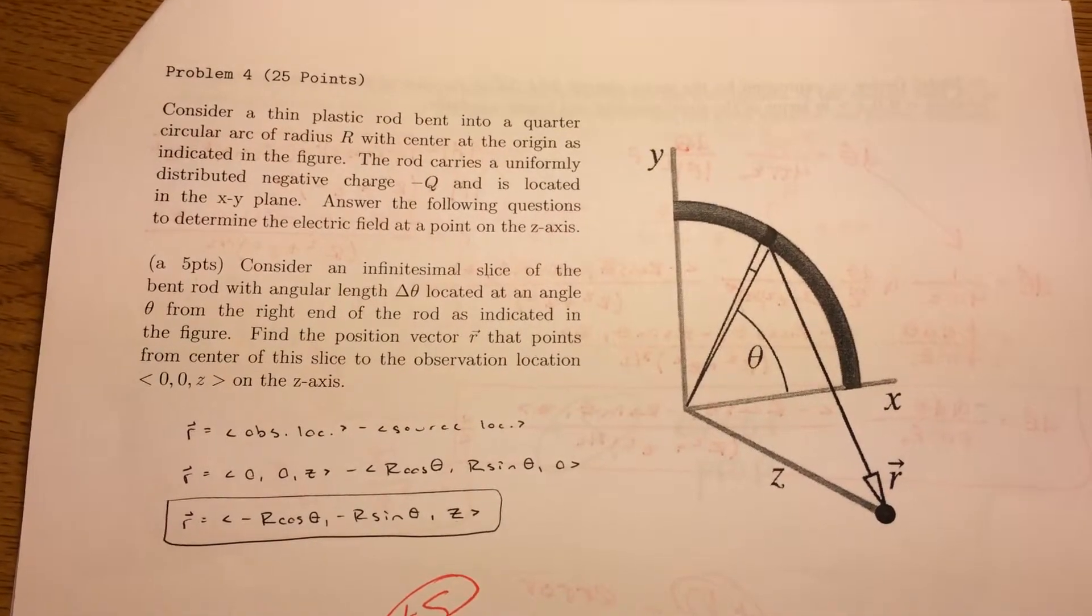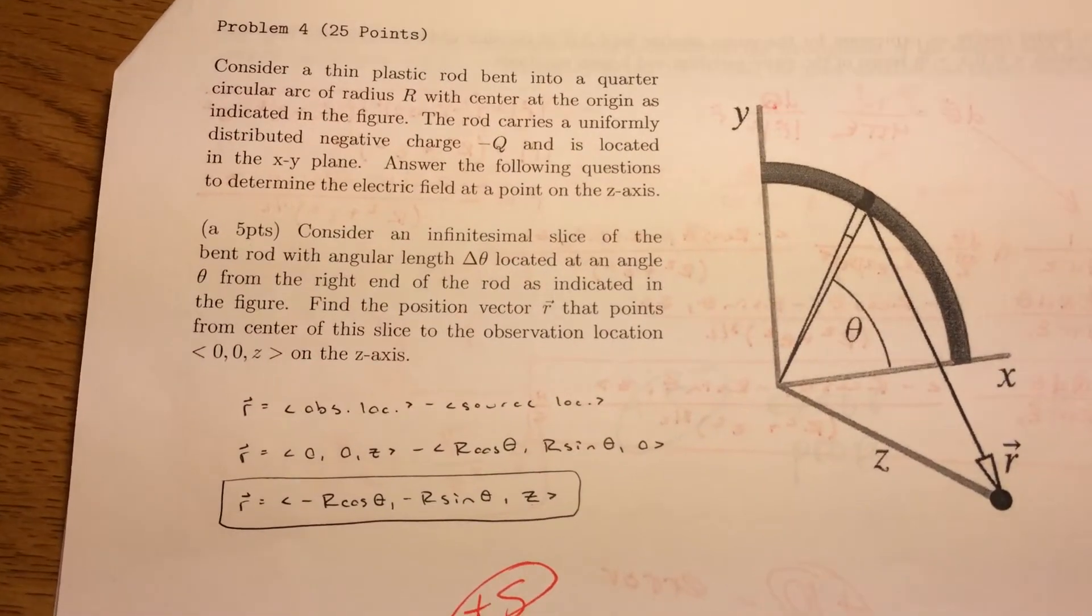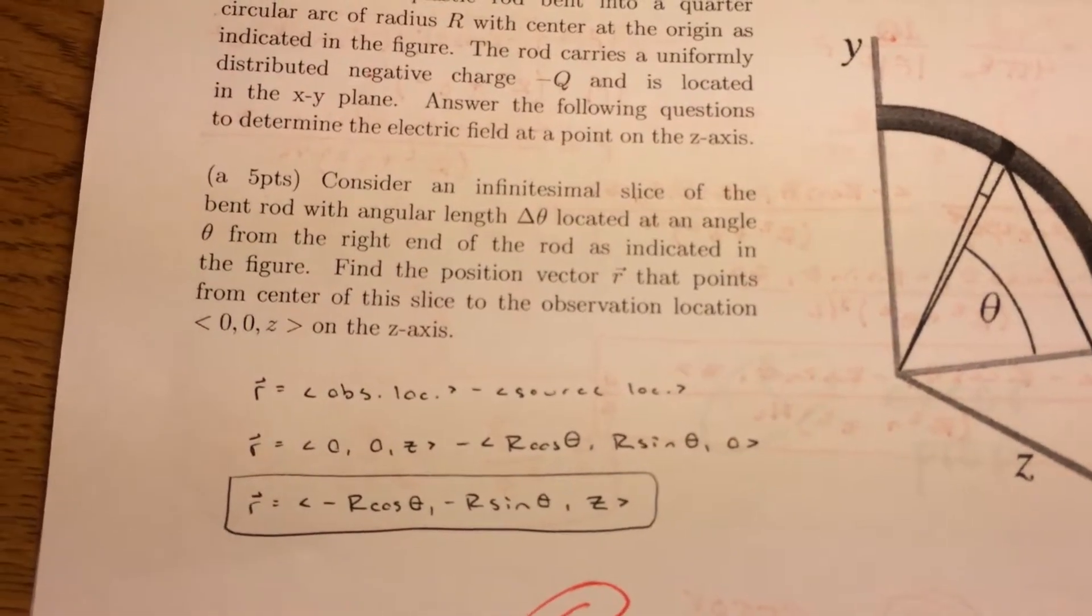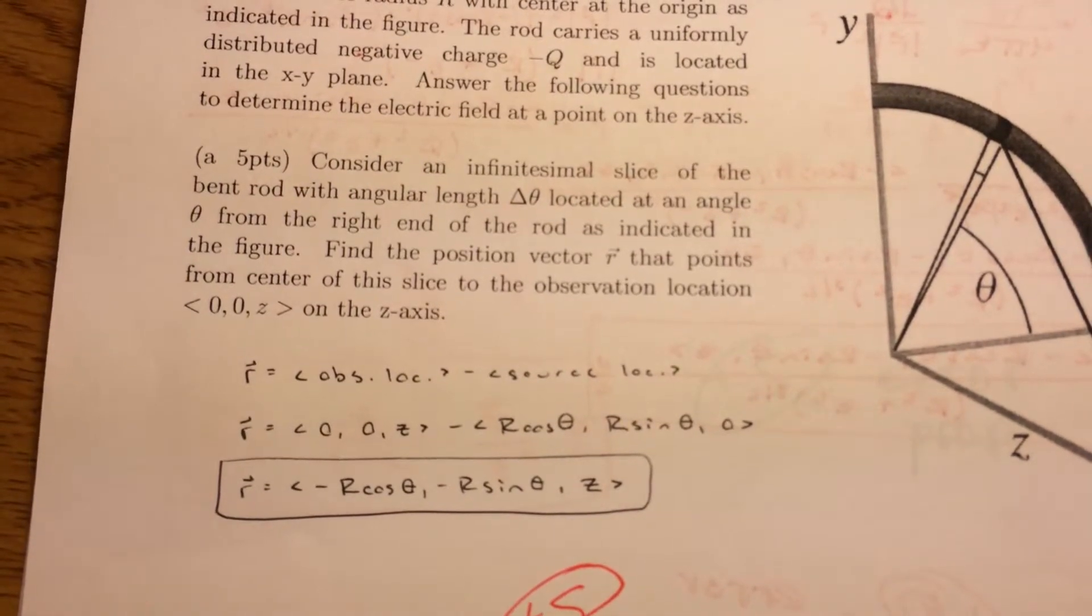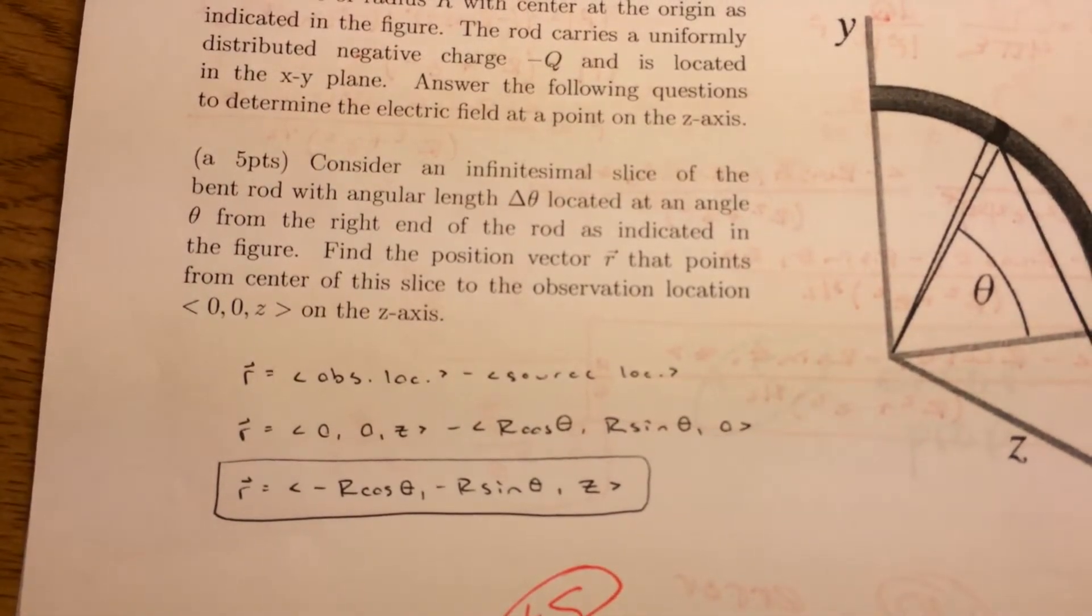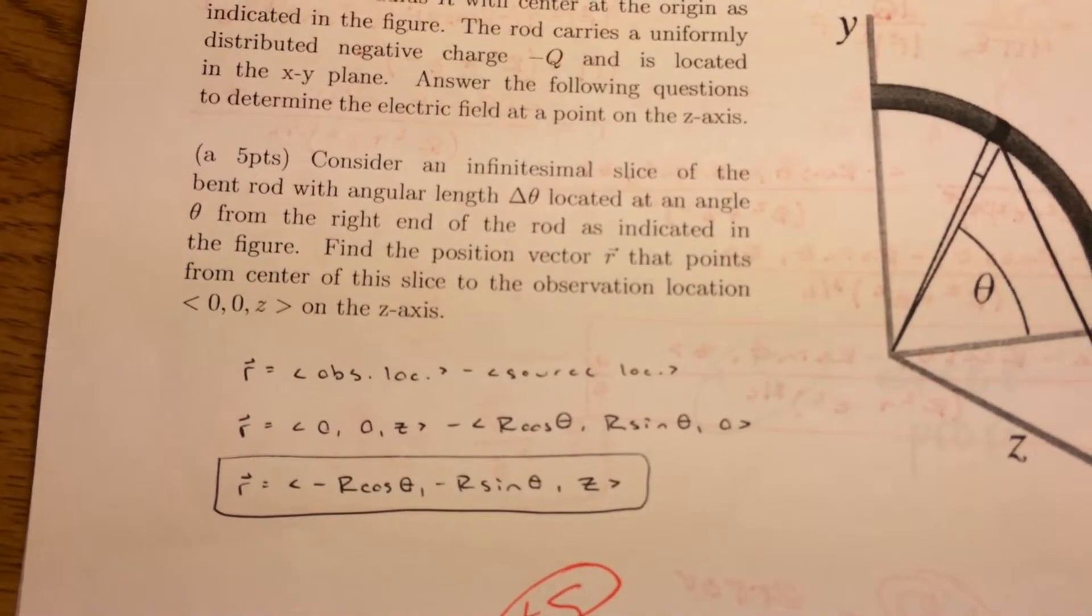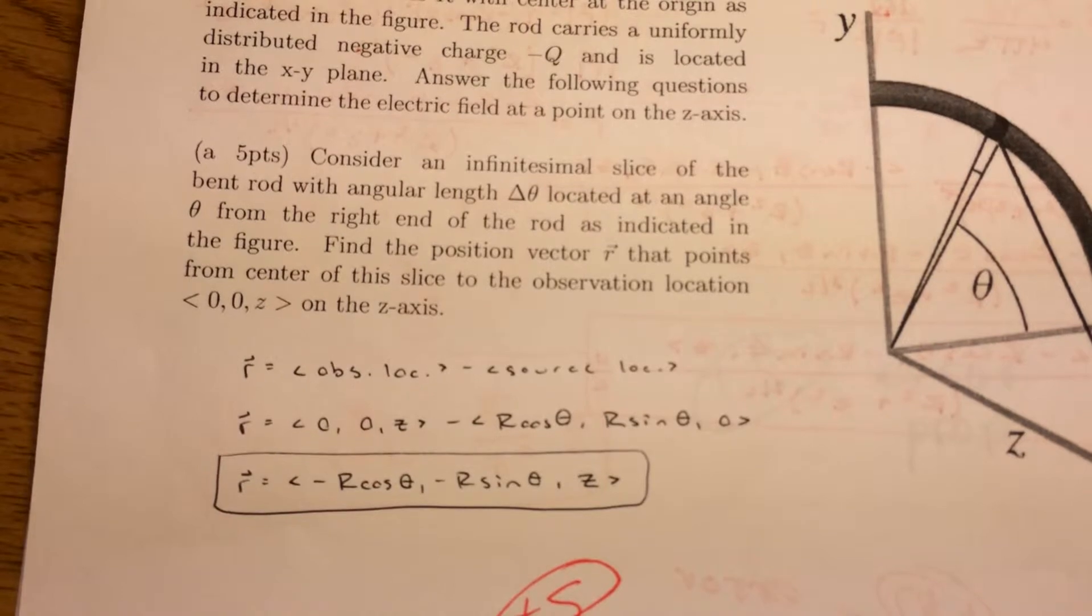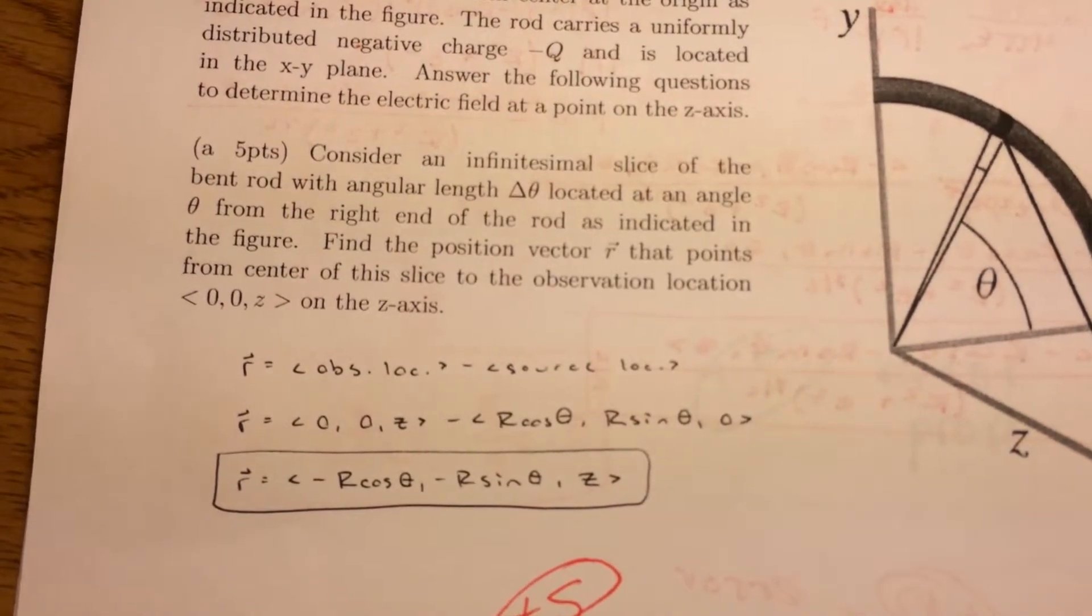Answer the following questions to determine the electric field at a point on the z-axis. For the first part, we're considering an infinitesimal slice of the bent rod with angular length delta theta, located at an angle theta from the right end of the rod as indicated in the figure. It's asking us to find the position vector R that points from center of this slice to the observation location, zero, zero, z, on the z-axis.